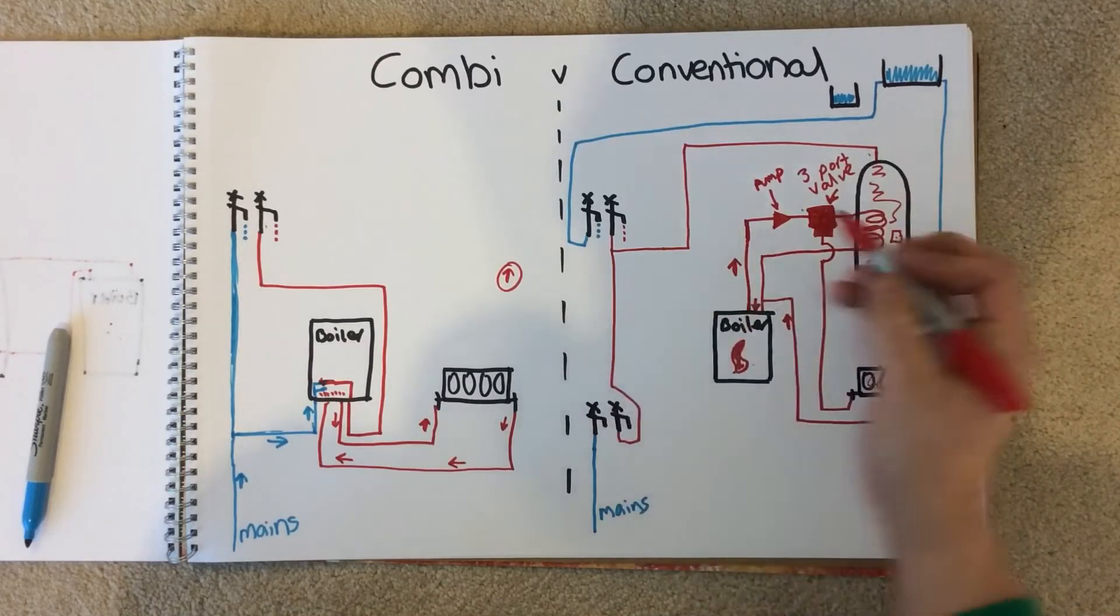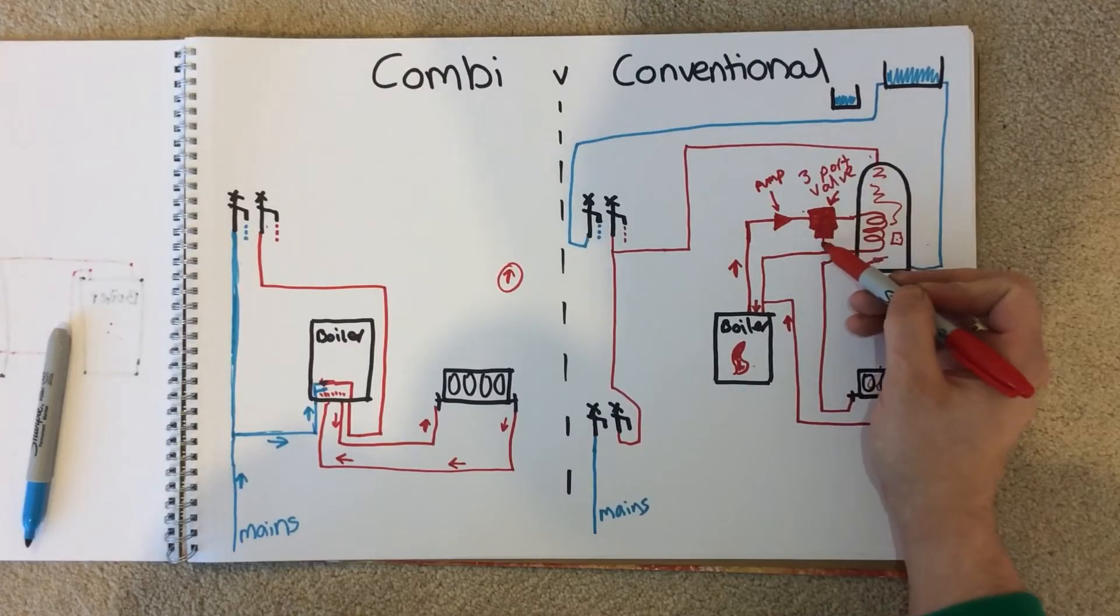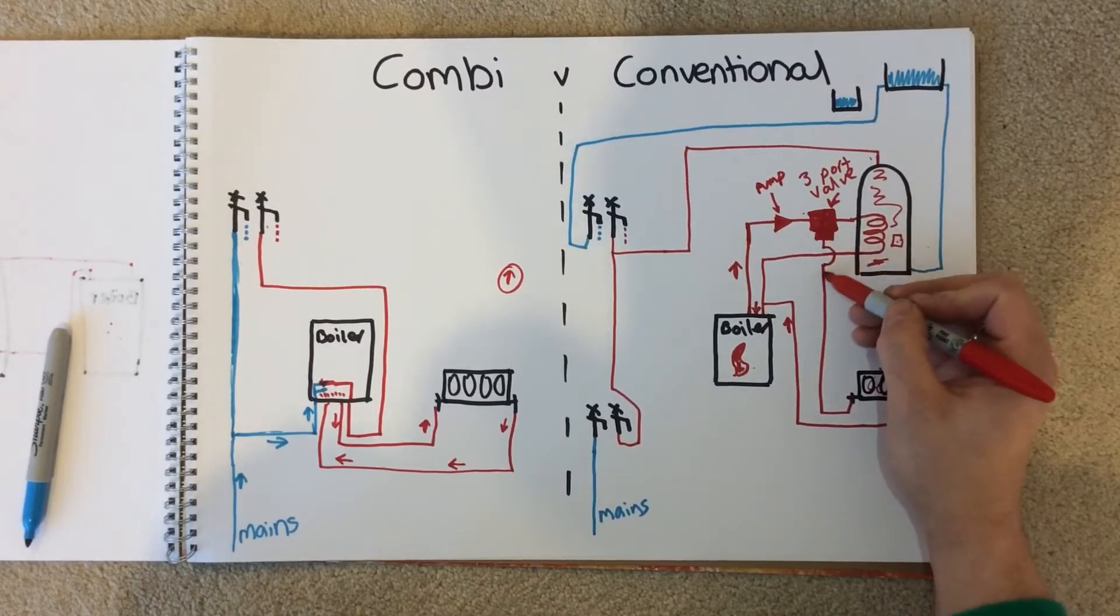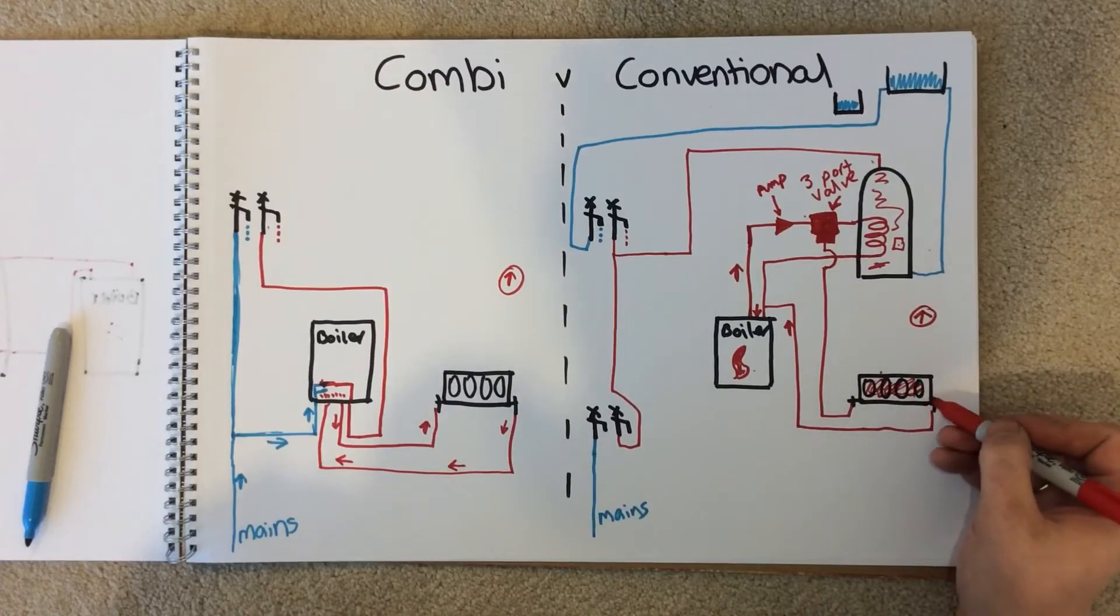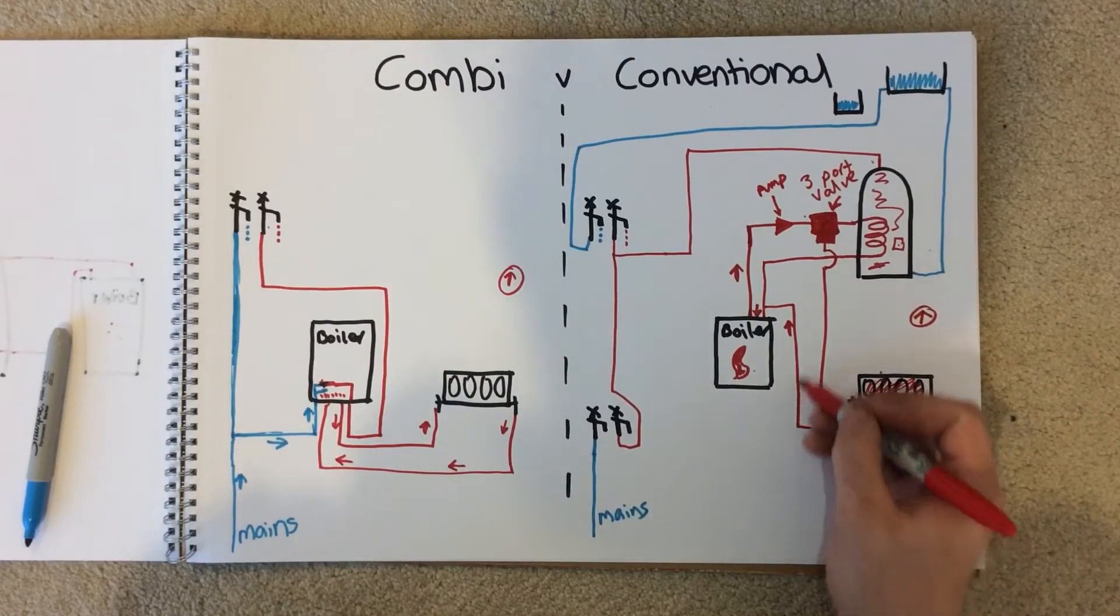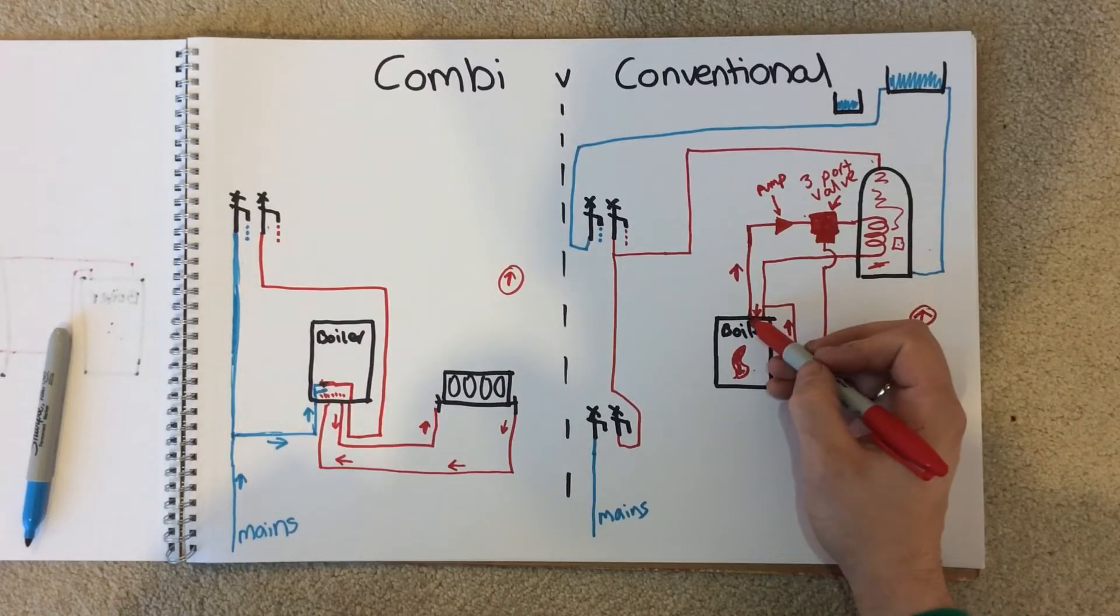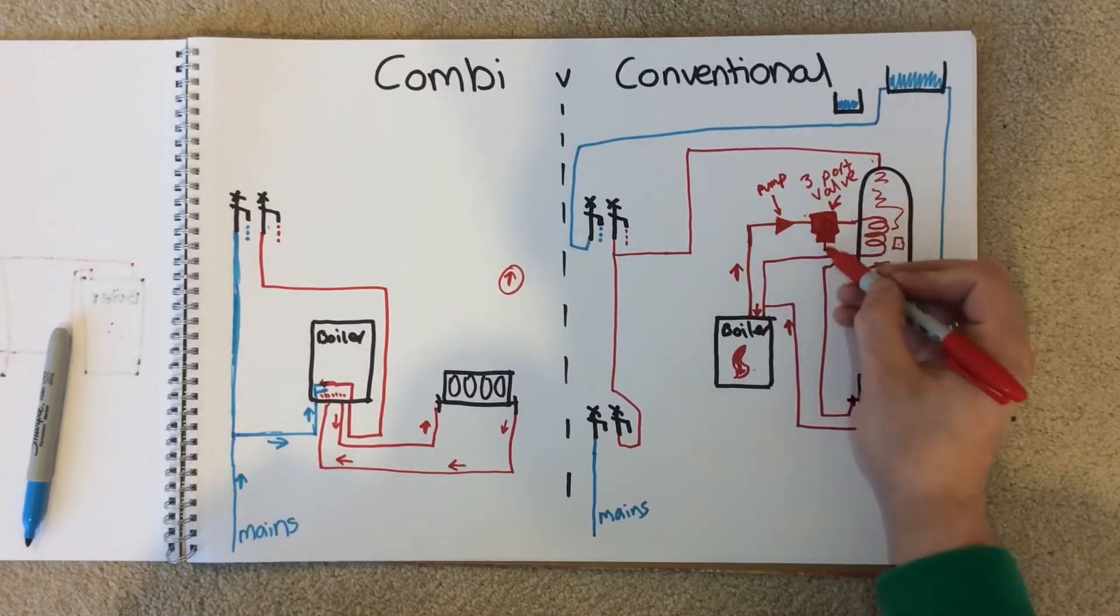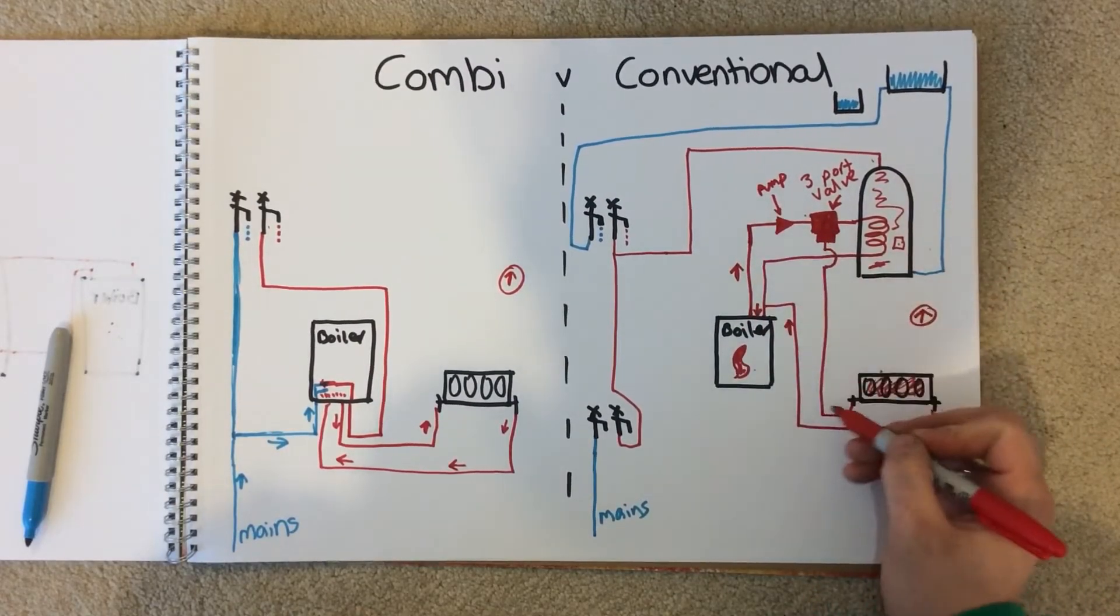You turn your thermostat on, it goes through the 3-port valve, goes down to your radiator, gets nice and hot, comes back to your boiler return. It basically creates a constant circuit - water's flowing constantly round for the time you want your heating or until the thermostat reaches its temperature limit.